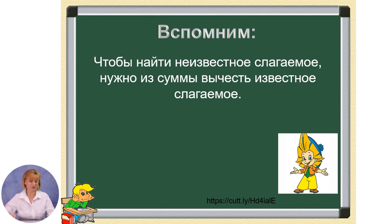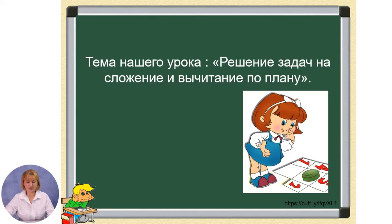Вспомним: чтобы найти неизвестное слагаемое, надо от суммы отнять известное слагаемое — to find an unknown addend, subtract the known addend from the sum. На прошлом уроке мы учились решать задачи, компонентами которых были сумма и слагаемые. Сегодня на уроке закрепим умение решать такие задачи по плану. Тема нашего урока — решение задач на сложение и вычитание по плану.